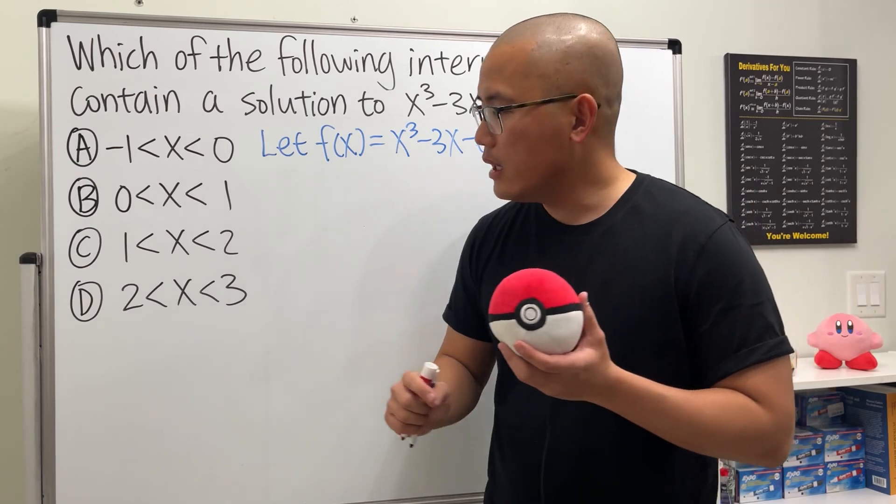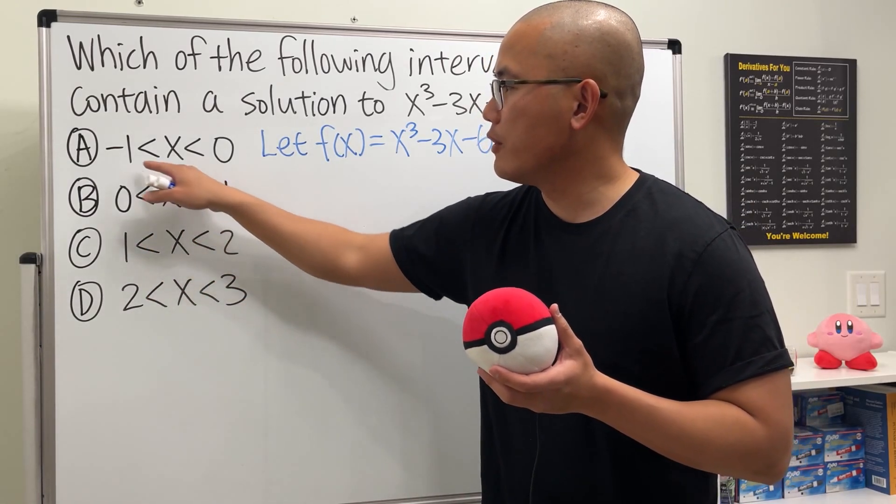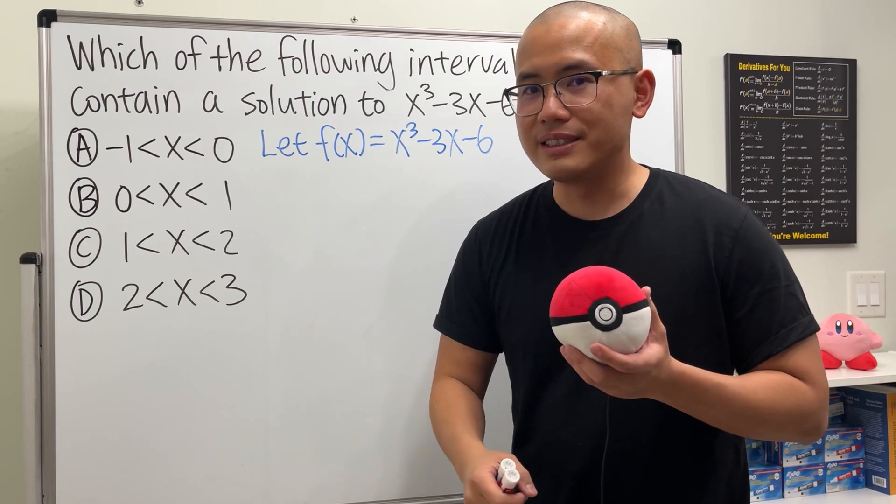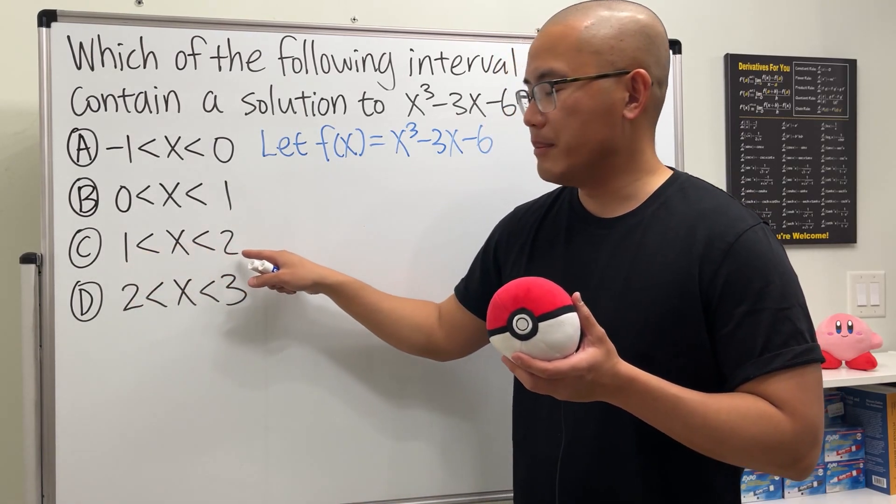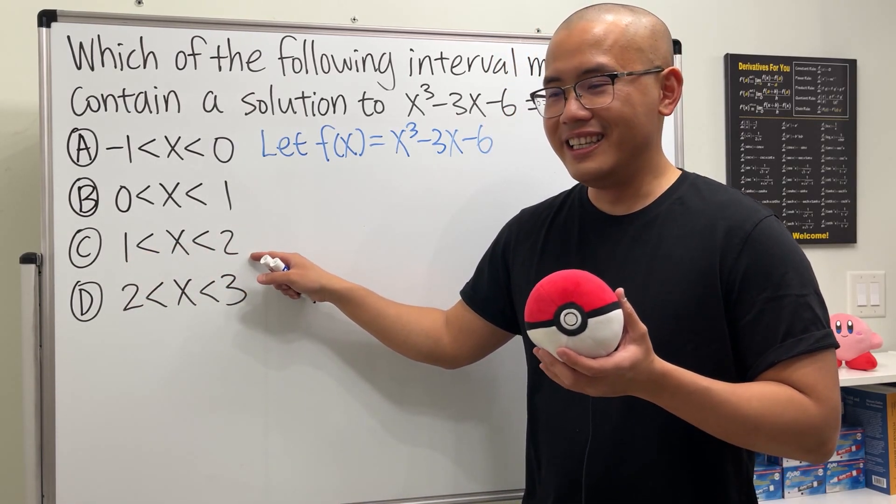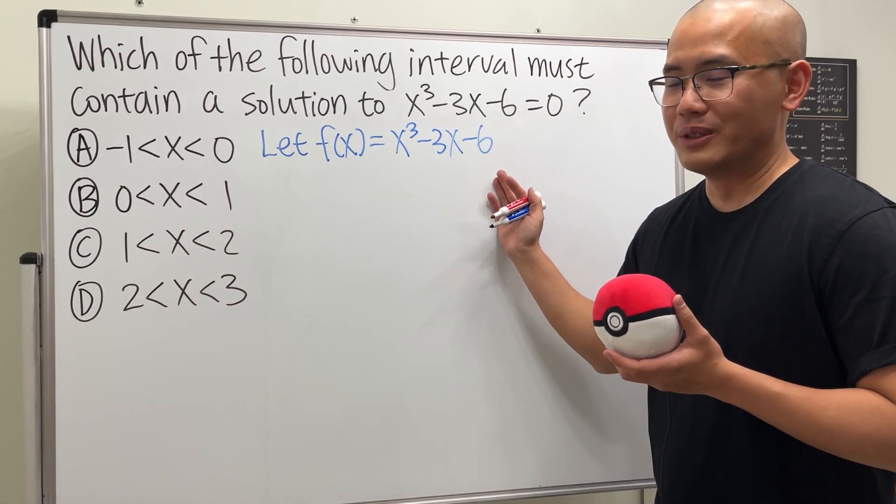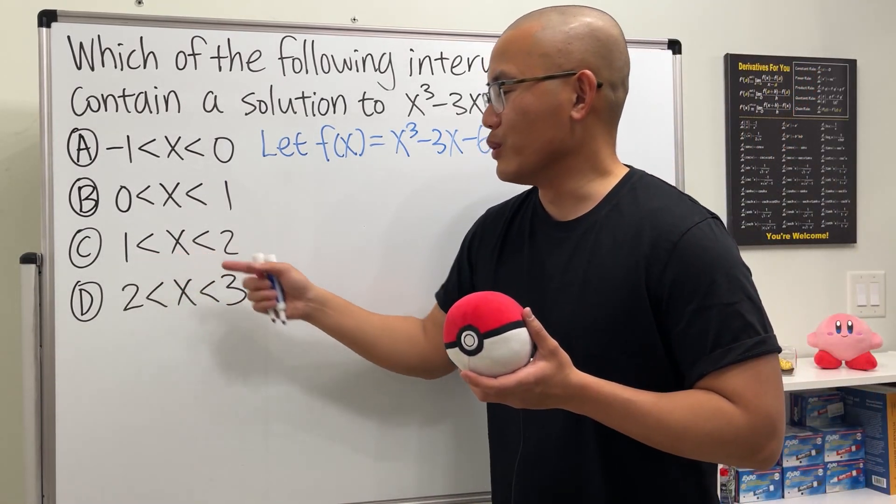And by the way, the reason that I did not include the equal sign here for the interval is because we are going to test out the endpoints. And you will see, at the endpoints, the function is not equal to 0. So that's why we don't have the equal sign.